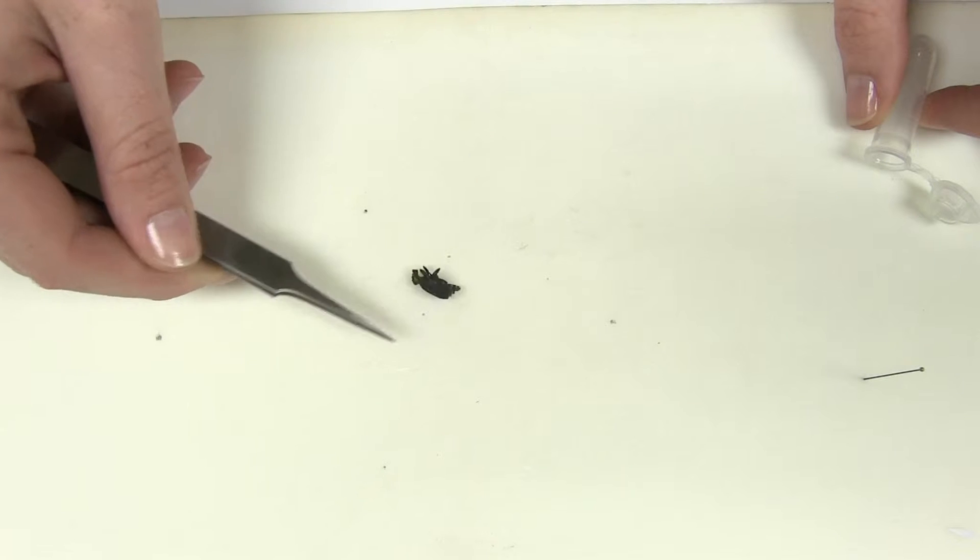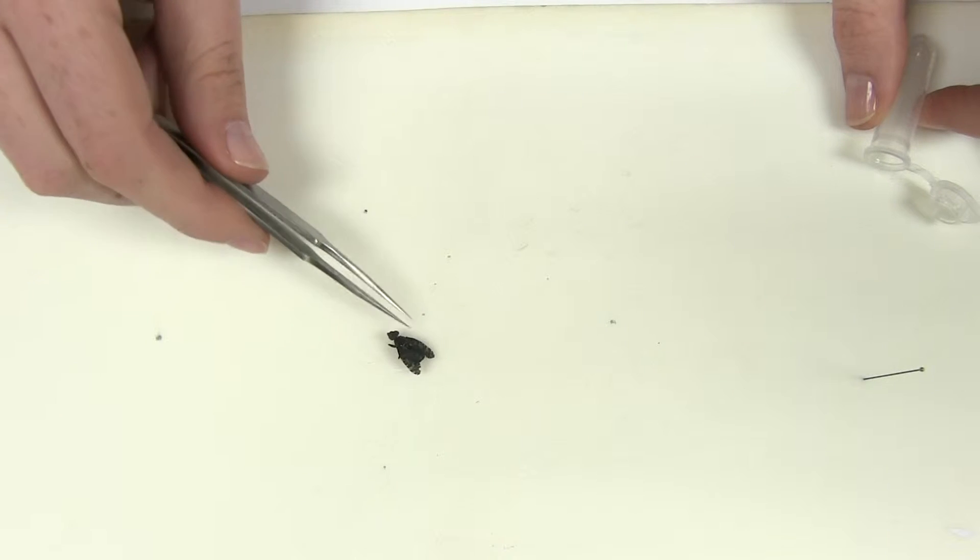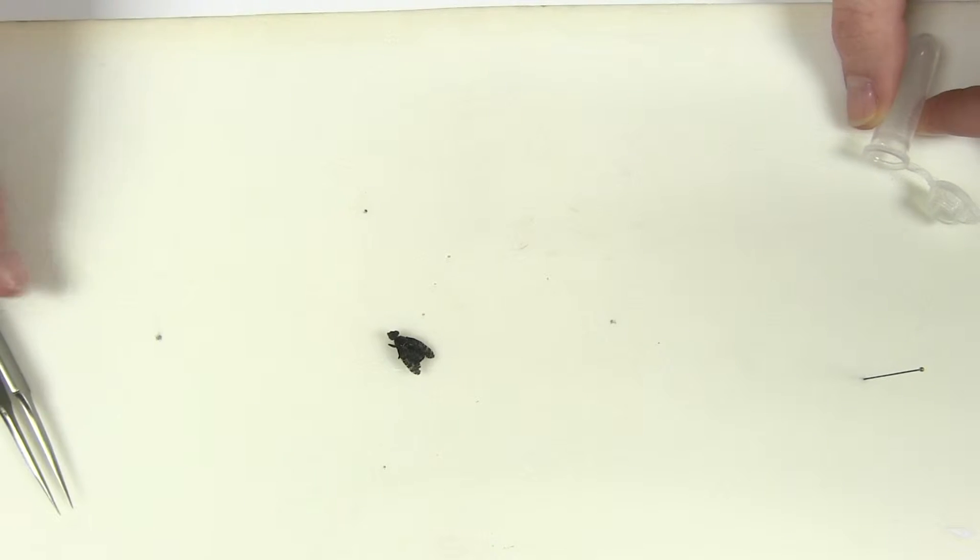For storage of small and soft bodied insects like this fly, it's sometimes best to store them wet rather than pinning.